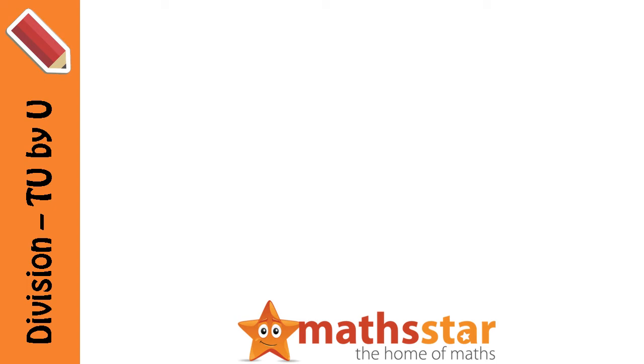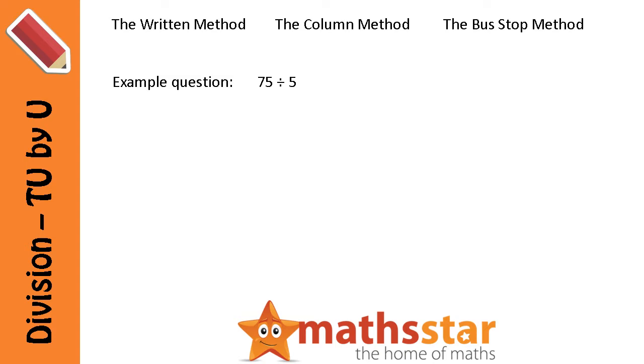The method we're going to use is the standard written method. It's sometimes referred to as the column method or the bus stop method. The example question we're going to use is 75 divided by 5.